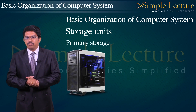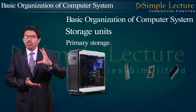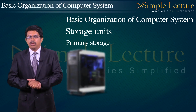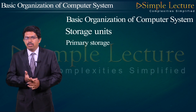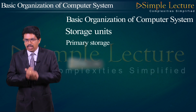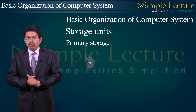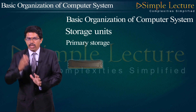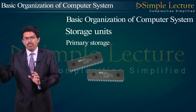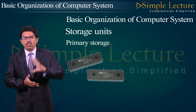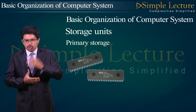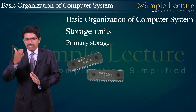Next we discuss the storage unit. There are two types of memory. The first is primary memory, which is present inside the system and is also called main memory. It consists of RAM and ROM. RAM stands for random access memory, where data is not permanent. ROM stands for read only memory, where data is permanent and non-volatile.